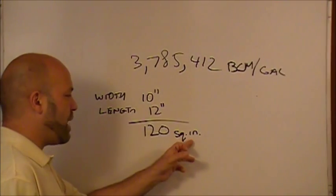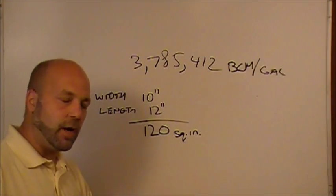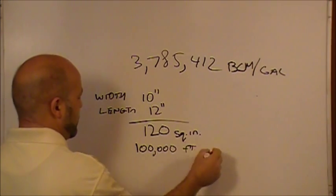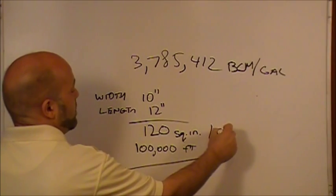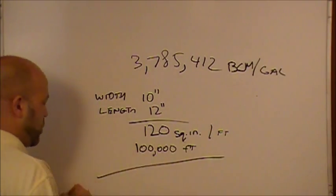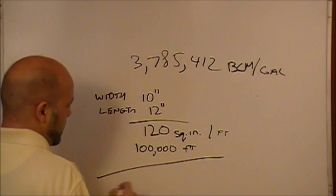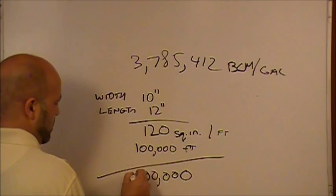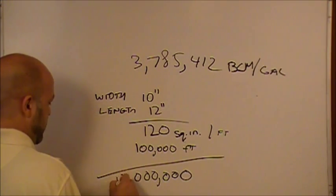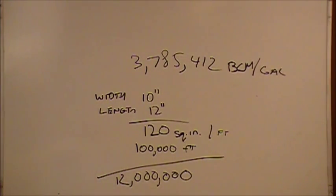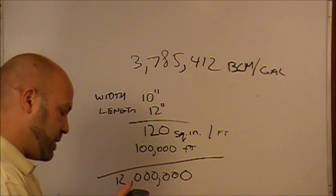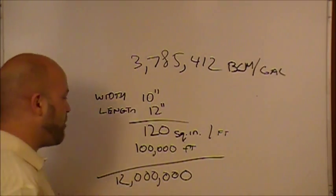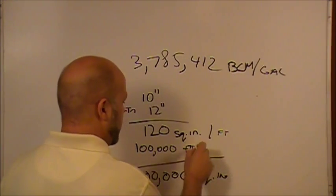Now if we have 120 square inches per foot and we're printing 100,000 feet, we multiply 120 by 100,000. Let me check with my calculator — 120 times 100,000 equals 12 million. So we've got 12 million square inches that we're printing in total.